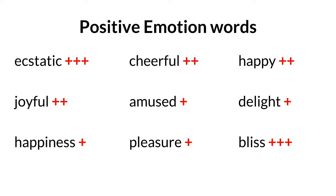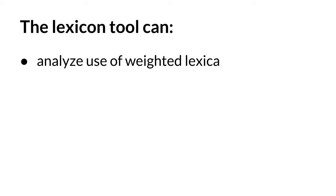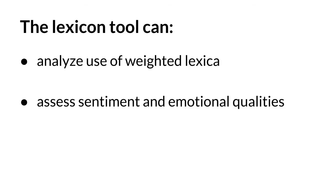The PERMA positive emotion lexicon actually includes exactly these kinds of weights, as do all of the lexica available in our Lexicon tool. During the analysis, the Lexicon tool automatically incorporates these weights into its calculations to provide more accurate results. After searching through a text sample, the Lexicon tool returns a numeric score for each text, indicating the relative use of positive emotion words. Other lexica are available in the tool to assess other types of sentiment, emotional, or psychological qualities of a text.